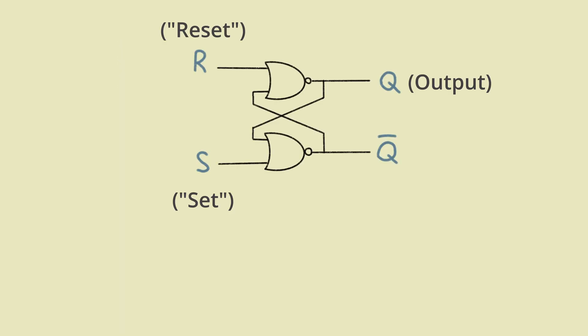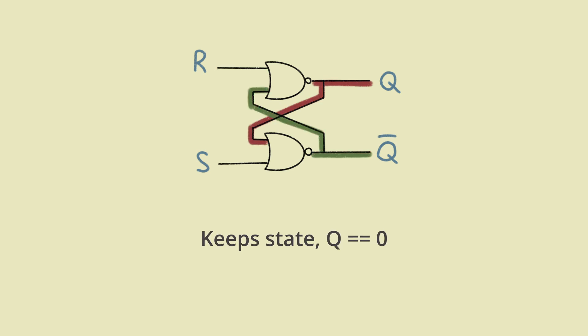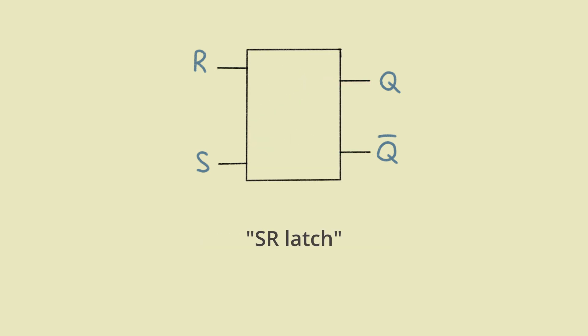This circuitry preserves its state. Using set, we can force its output to 1. Look, set signal is disappeared. But the output is still there. Until we trigger the reset. This element is called SR latch.